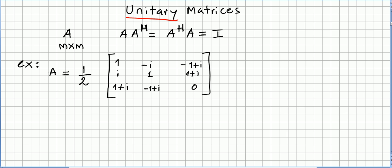I picked this matrix A: 1 over lambda of 1 minus i, minus 1 plus i, i, 1, 1 plus i, 1 plus i, minus 1 plus i, and 0. And let us check if this matrix A is unitary.